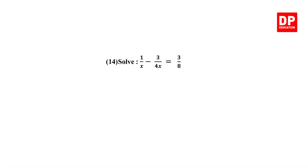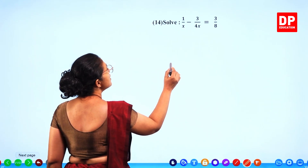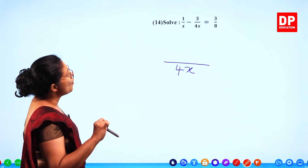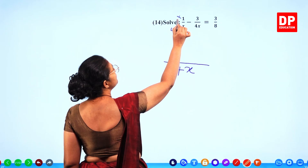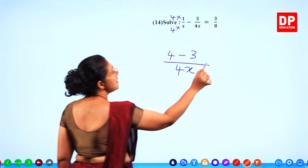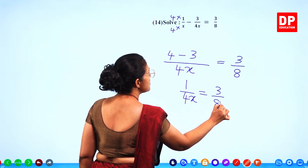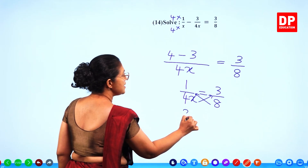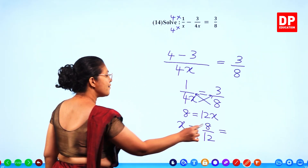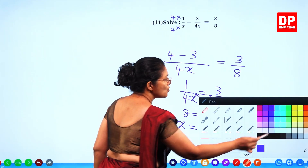Question number 14: solve. Algebraic fractions with subtraction. Find the LCM of x and 4x, which is 4x. Convert both fractions to denominator 4x: multiply the first by 4 to get 4 over 4x, and the second stays as 3 over 4x. So (4 minus 3) over 4x equals 3 over 8, giving 1 over 4x equals 3 over 8. Cross multiply: 8 equals 12x, so x equals 8/12 equals 2/3. 2 marks.